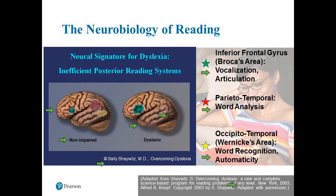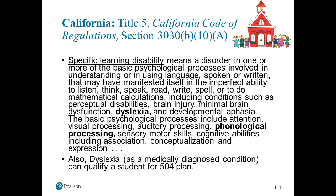Those tend to be the areas where we see the brain differences between non-impaired and dyslexic individuals, so the neurobiology is fairly clear. With regard to California, I pulled this from Title V, the California Code of Regulations, regarding bringing the term dyslexia into schools — because for quite some time, the term dyslexia was specifically left out of educational legislation.